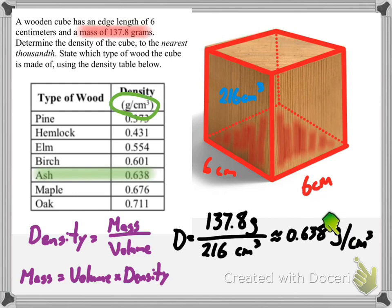And that's our density unit, 0.638. And so it's ash. So let's take a look at one more example.